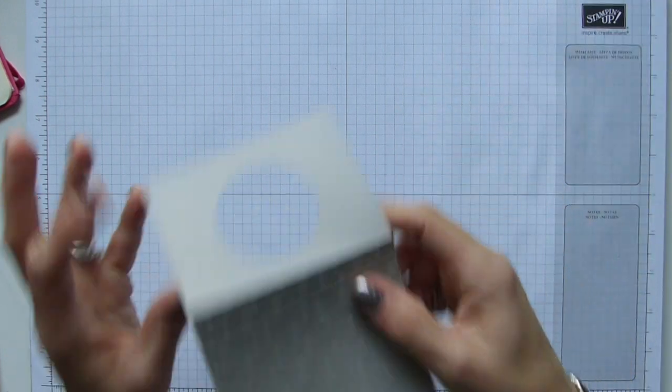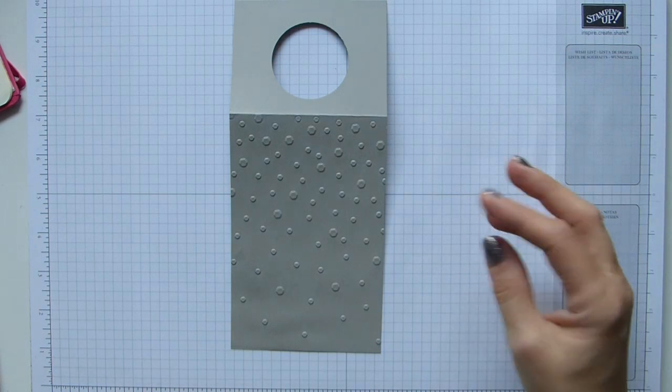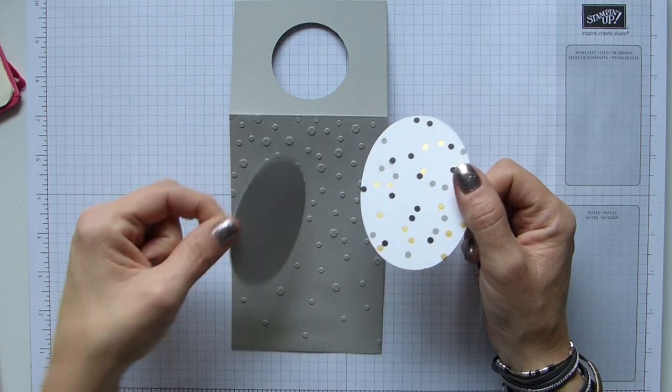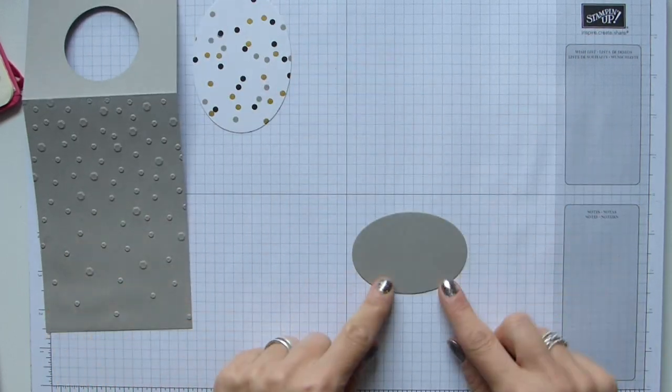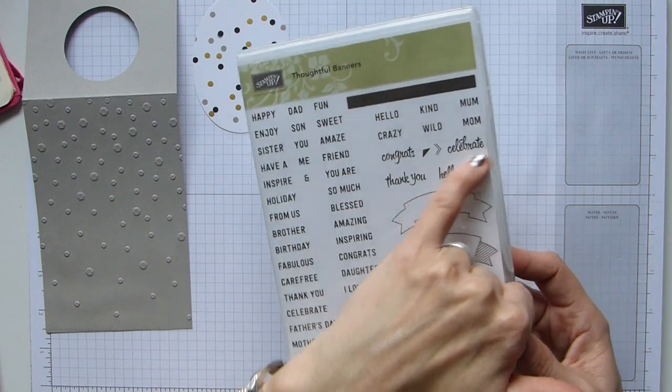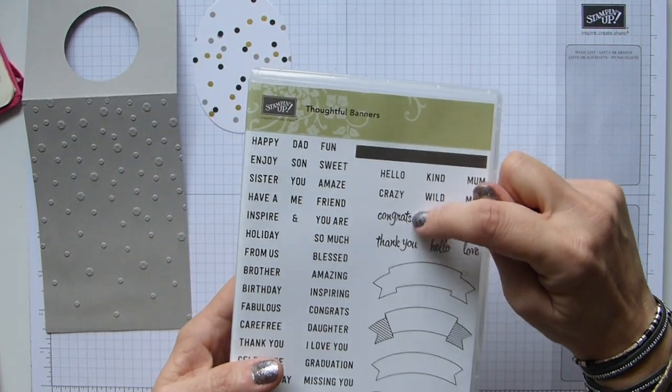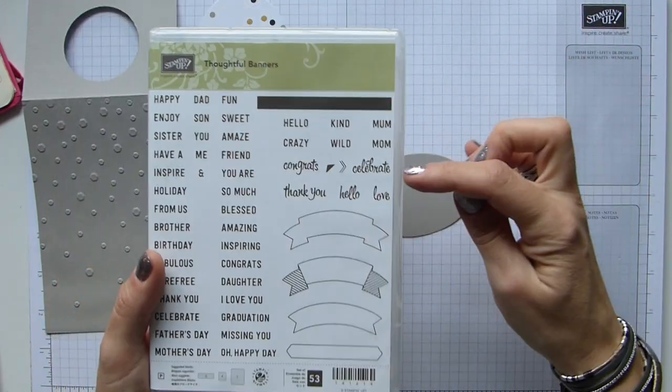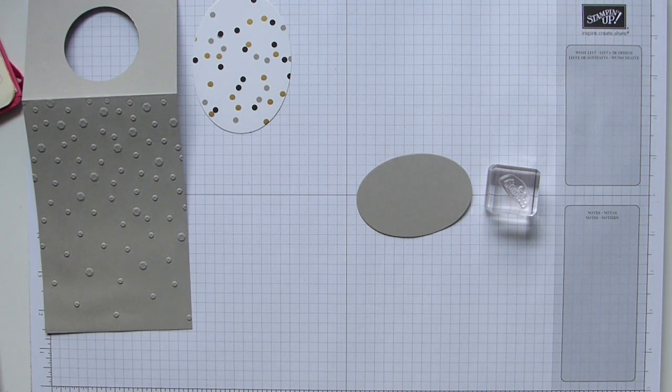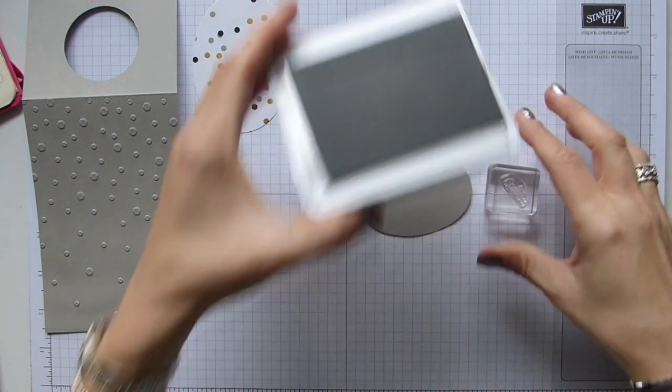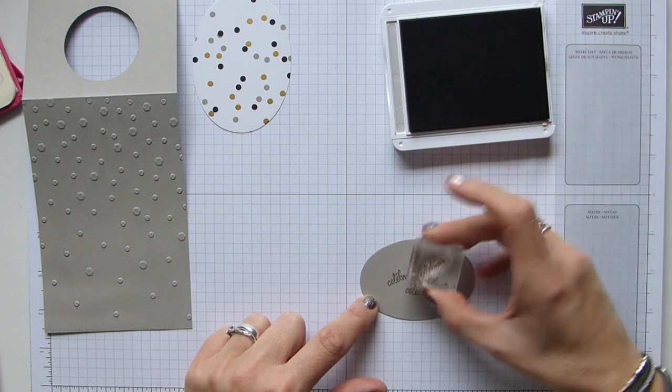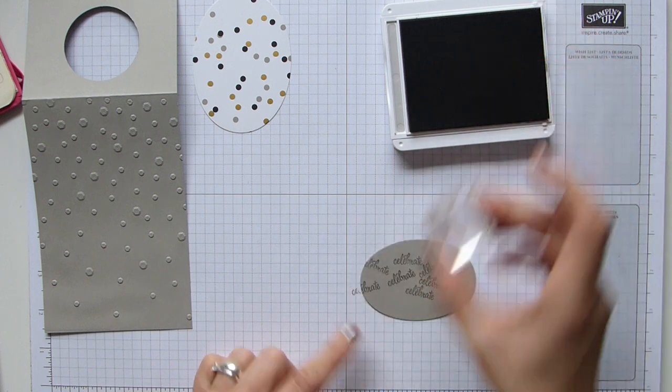Now you've done that embossing, we just need to decorate it. I have two of my layered ovals. This is the gorgeous Broadway Bound DSP and then another oval of the grey granite cardstock. I'm going to stamp onto this. I've simply used Thoughtful Banners and I've gone with celebrate here. I'm simply just random stamping. I love random stamping because you just don't have to go with anything being too perfect.